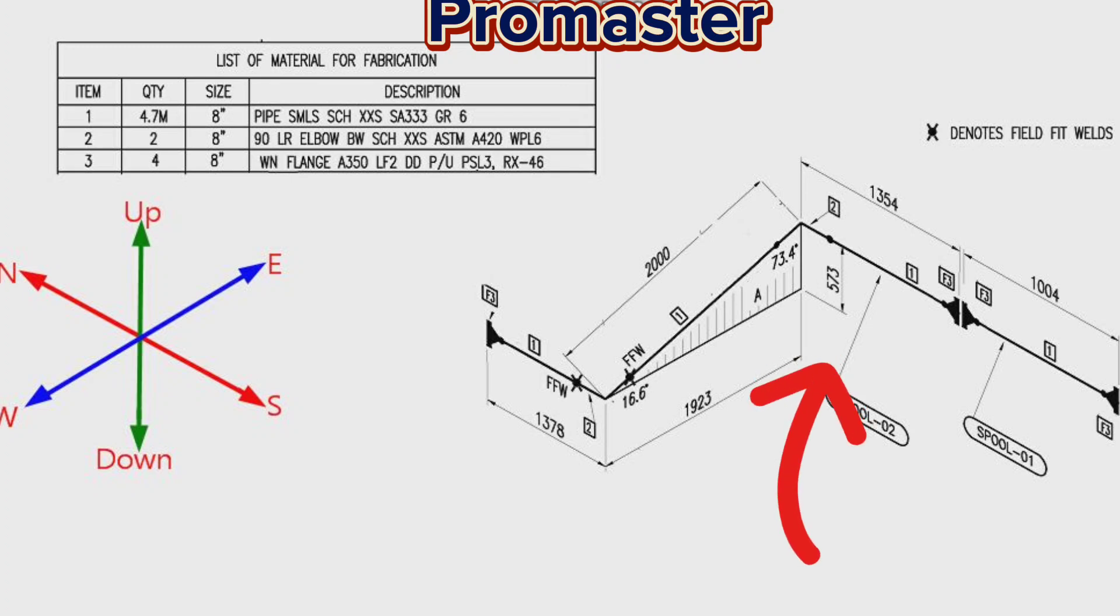This is the pipe isometric drawing. This pipeline consists of two spools. This is the first spool. This is the second spool.